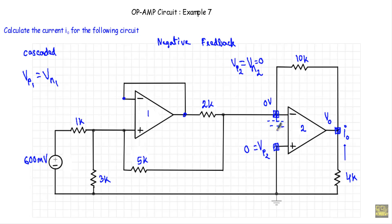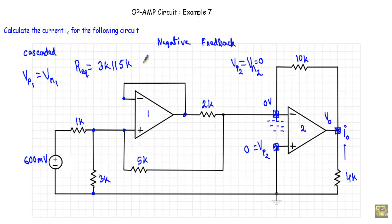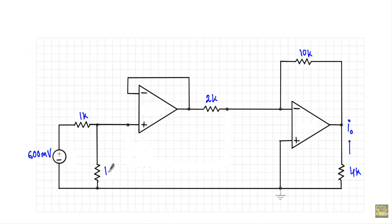One end of the 3kΩ resistor is connected at the non-inverting terminal of op-amp 1, and one end of the 5kΩ resistor is also connected there. The other end of the 3kΩ resistor connects to actual ground and the other end of the 5kΩ connects to the virtually grounded terminal. Therefore the 3kΩ and 5kΩ resistances are connected in parallel, and their equivalent resistance is 1.875kΩ. I replace both with this equivalent resistance.